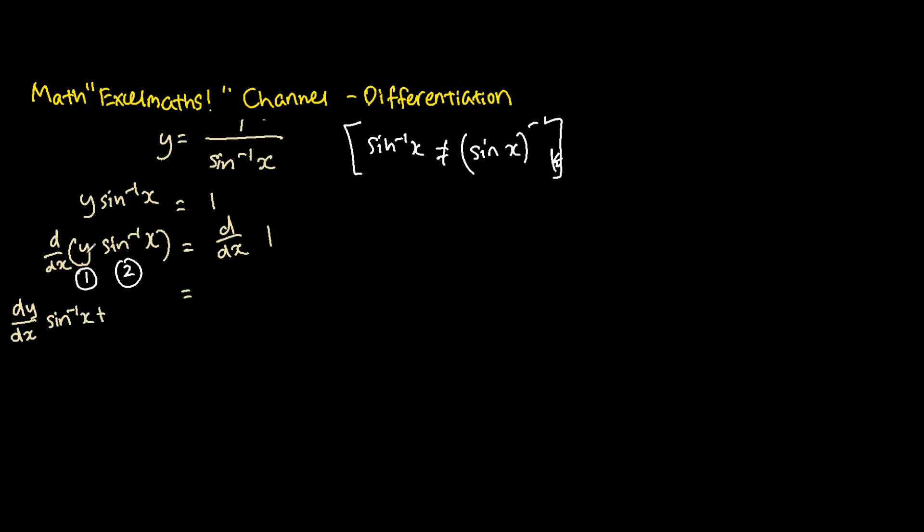Plus we keep the first term, and then differentiate the second term. So we know that the differentiation of sine inverse x is equal to 1 over the square root of 1 minus x squared. And on the right hand side is just 0.